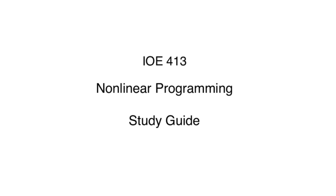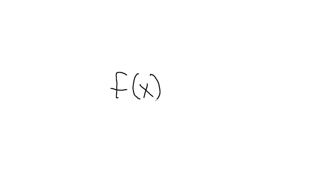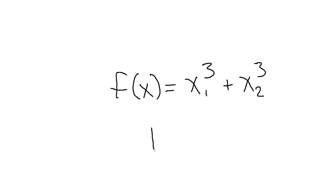IOE 413 nonlinear programming study guide. This question considers the function f(x) = x1³ + x2³. Part A asks whether f(x) is convex on R².